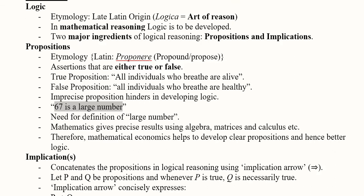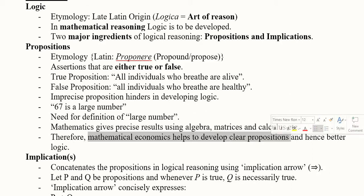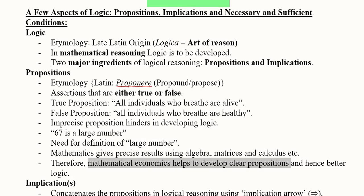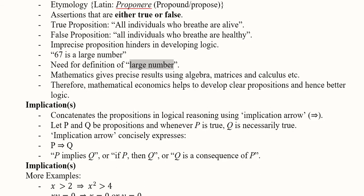Mathematics gives us precise results by using algebra, matrices, and calculus. Mathematical economics helps us develop clear propositions and hence better logic. We are not doubtful about mathematical economics when it uses propositions because it is a precise science, and it allows us to explain situations in a clear way using clear and true propositions.